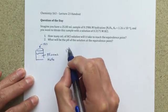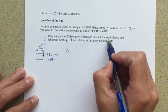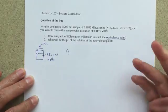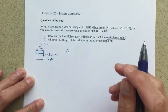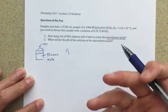Question number one is asking how many milliliters of HCl solution will it take to reach the equivalence point? So we really need to have a good, firm understanding of what equivalence point means. Equivalence point is going to be where the moles of added acid equal the moles of base that we started with.